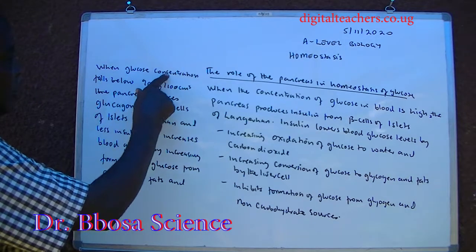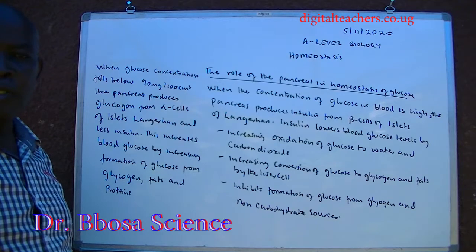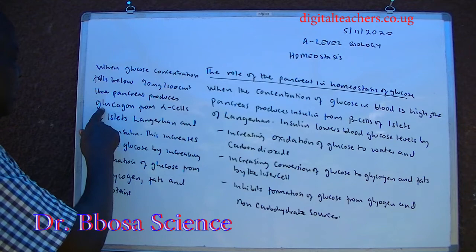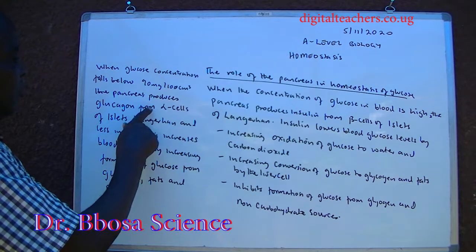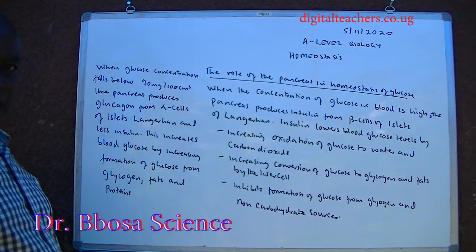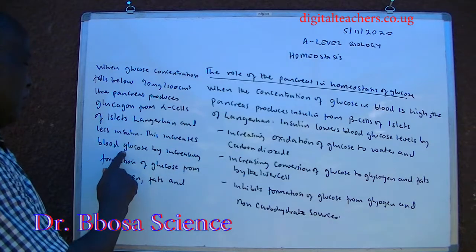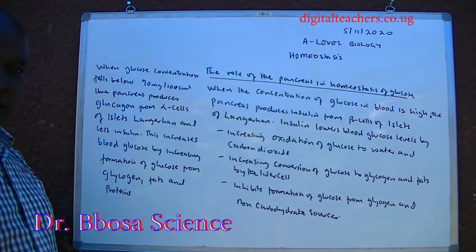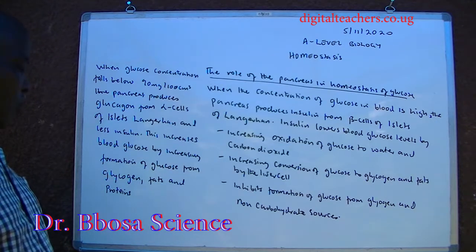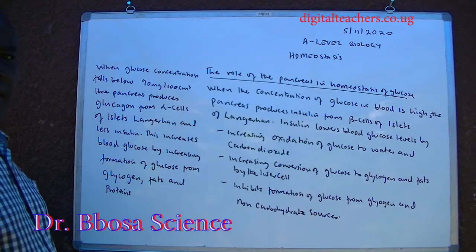When glucose concentration falls below 90 mg per 100 cm cubed, the pancreas produces a hormone glucagon from alpha cells of the islets of Langerhans and less insulin. This increases blood glucose by increasing the formation of glucose from glycogen, fats and proteins.